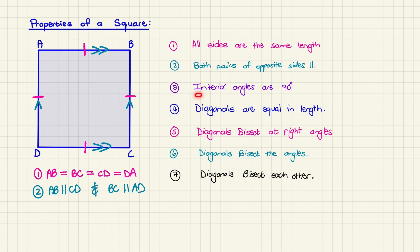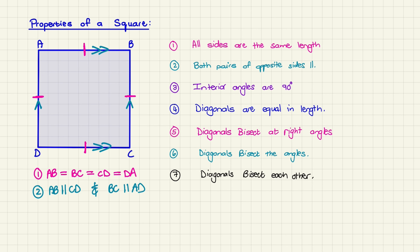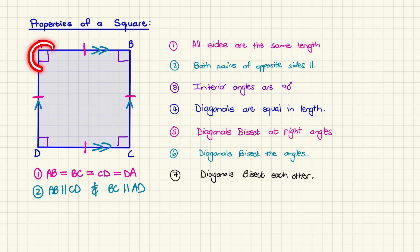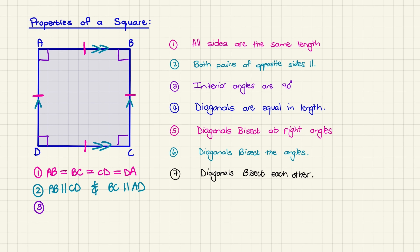Our third property is that the interior angles are all 90 degrees. The interior angles are the angles on the inside of the square, and this property states that all of these angles equal 90 degrees. In mathematics we indicate 90 degrees with a little square in the corner, so when you see those little squares it means that angle is 90 degrees. We can write it as angle A = angle B = angle C = angle D = 90 degrees.